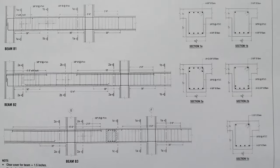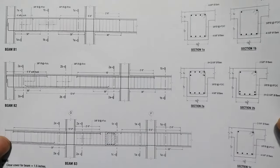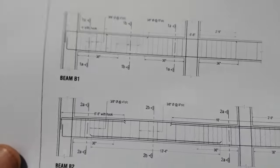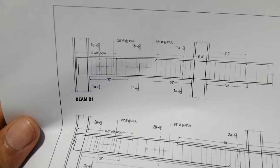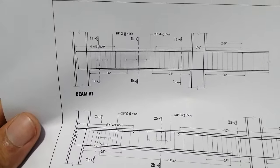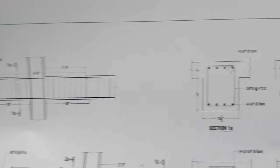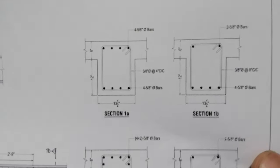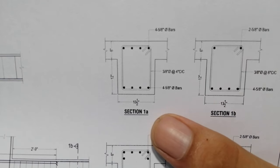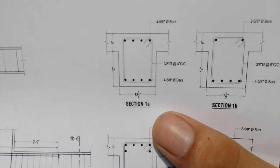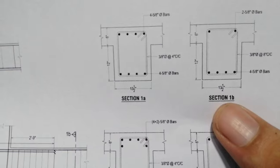This drawing shows the details for different beams — B1 and B2. Here you can see this is B1. This is the long section of B1, and here is the cross-section of B1 — section A1 and section AB, as you can see.